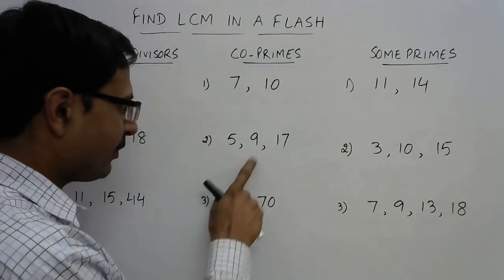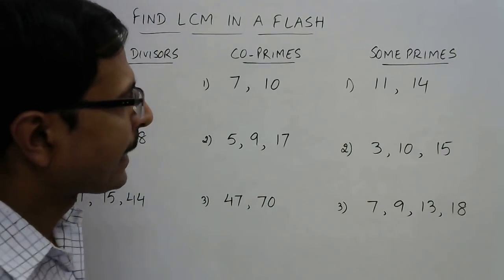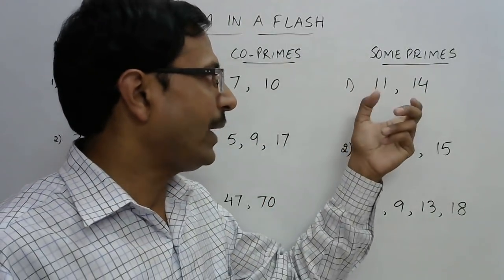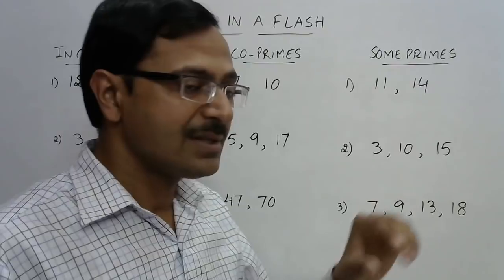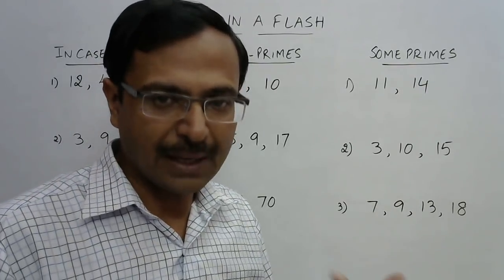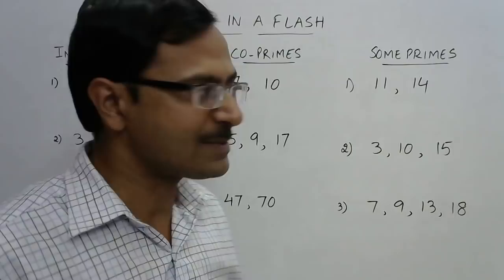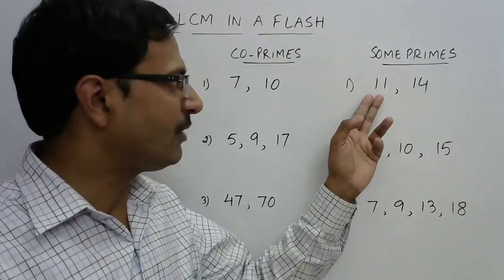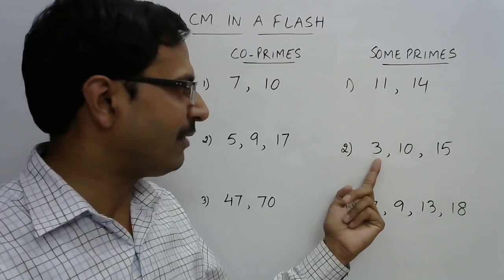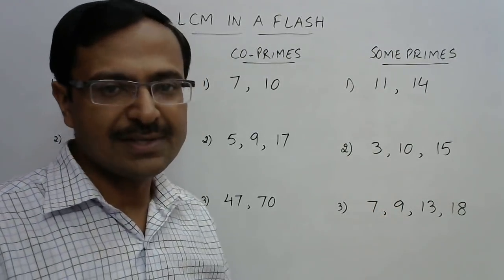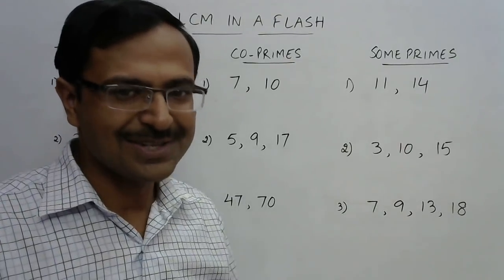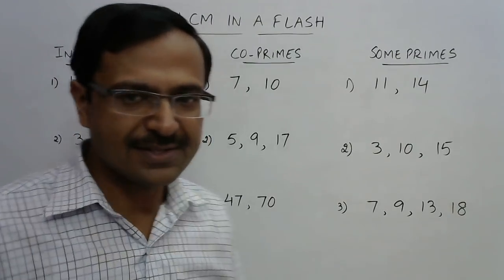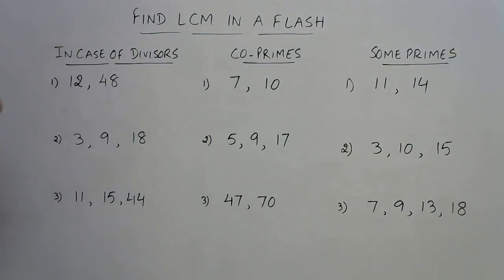In the case of co-primes, finding LCM can also be very easy. Then there are cases with prime numbers — when the given numbers have one or two or more prime numbers but not everything is prime. It may be that there is only one prime number or there are two primes. Once you understand this concept, everything will be very easy for you. So let's get on with this.